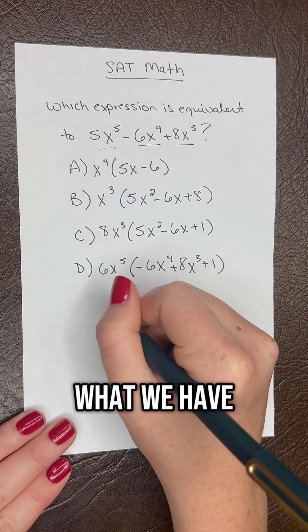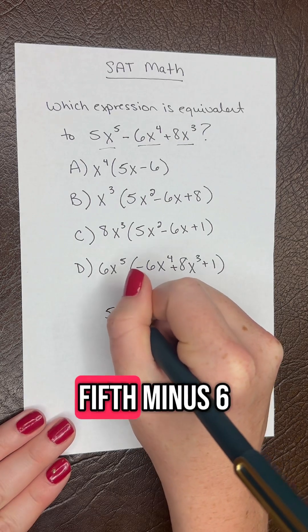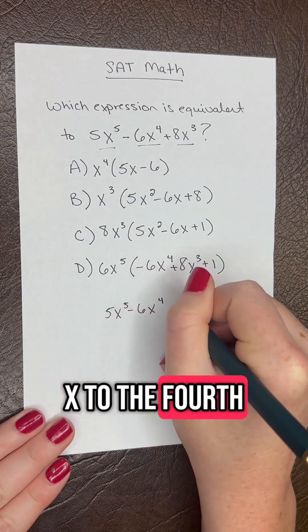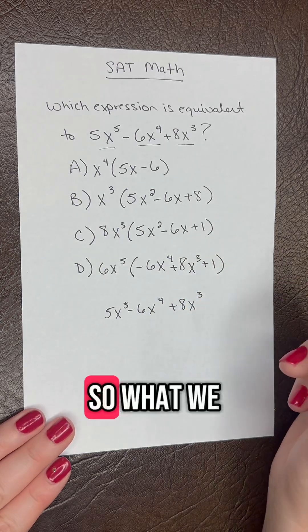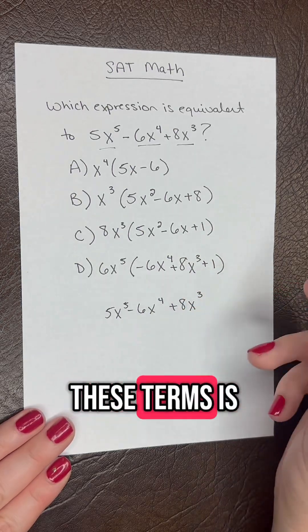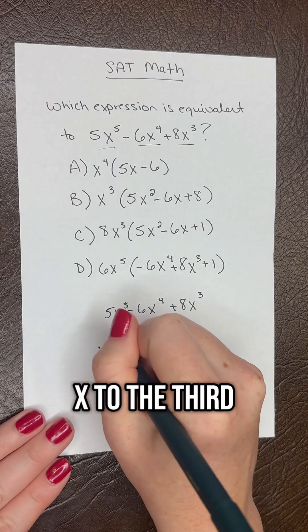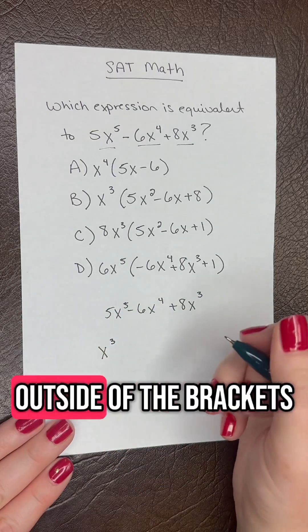So let's do a rewrite of what we have down here. We have 5x to the fifth minus 6x to the fourth plus 8x to the third. So what we can pull out of each of these terms is going to be x to the third. So that's going to go on the outside of the brackets.